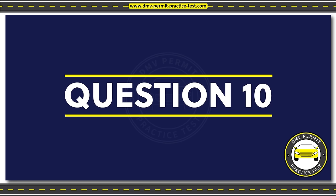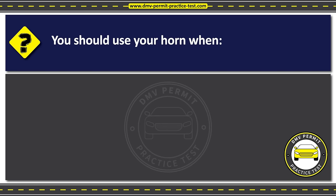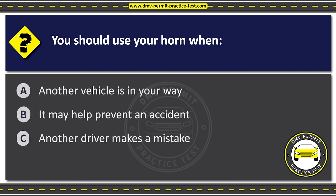Question ten. You should use your horn when Option A: Another vehicle is in your way. Option B: It may help prevent an accident. Option C: Another driver makes a mistake. The correct answer is Option B: It may help prevent an accident.